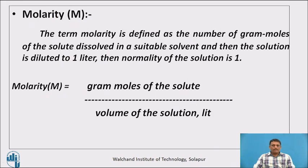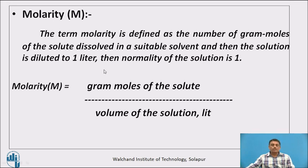Now we will see molarity. The term molarity is defined as the number of gram moles of the solute dissolved in a suitable solvent, and then the solution is diluted to 1 litre. The resultant solution is known as a 1 molar solution. The basic difference between normality and molarity is that a normal solution is prepared by dissolving the gram equivalent weight of the solute, while a molar solution is prepared by dissolving the gram moles of the solute in 1 litre. Molarity M equals gram moles of the solute divided by volume of the solution in litres.